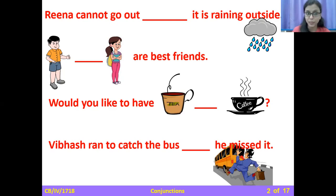Next, let's name them. Rahul and Neeti are best friends. So I can join these two by using and. Rahul and Neeti are best friends. So and is used to share similar idea.